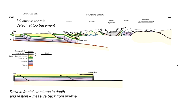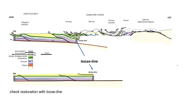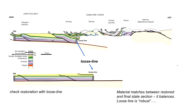The thrust trajectories restored onto the restored template have the same attributes as shown in the cross-section at the top — the thrusts cross the full stratigraphy and detach at the top of the basement. It is important to draw the loose line at this stage to ensure the geometry interpreted beneath the Clermont anticline is restorable, because any uncertainties would propagate through the rest of the interpretation. The material matches between the restored and final-state sections, so this frontal part of the structure, as interpreted, balances.